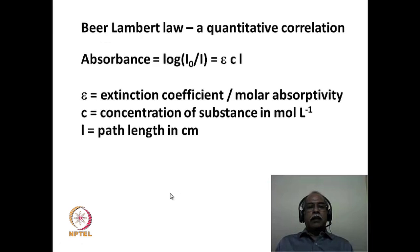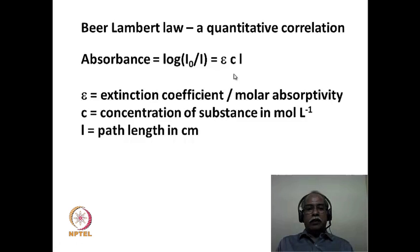Certain laws govern the quantitative aspects of spectroscopy. One is Beer-Lambert's law — a basic law dealing with the quantitative correlation between absorbance and concentration. Absorbance, the logarithmic ratio of I₀/I, is directly proportional to the concentration. The proportionality constant is known as the extinction coefficient or molar absorptivity, which is constant at a given wavelength for a given substance. This is what makes absorption spectroscopy a quantitative tool for finding the concentration of unknown substances.